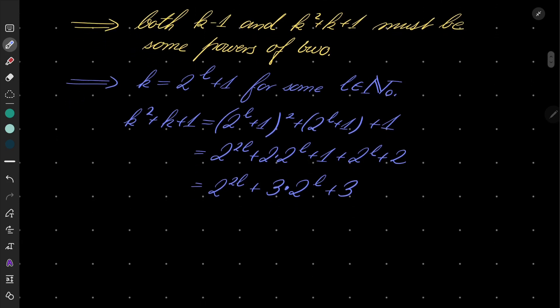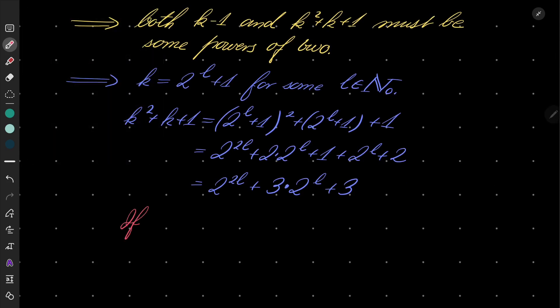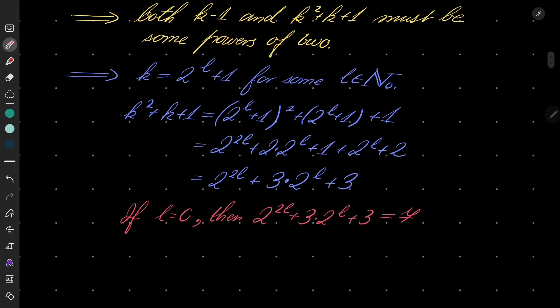Now let's consider two cases. If l is 0, then 2 to the power 2l plus 3 times 2 to the power l plus 3, well we have 1 plus 3 plus 3 is 7, which is not a power of 2.